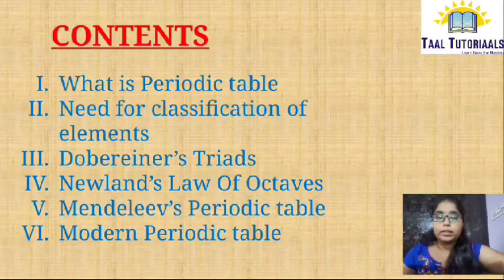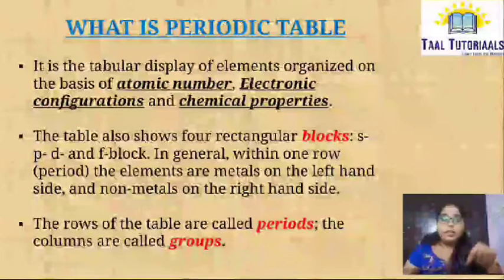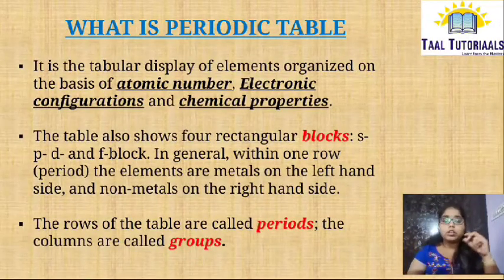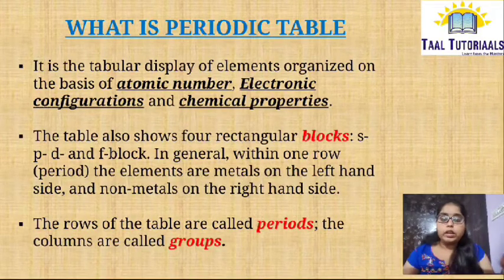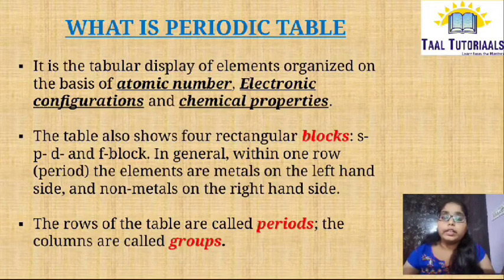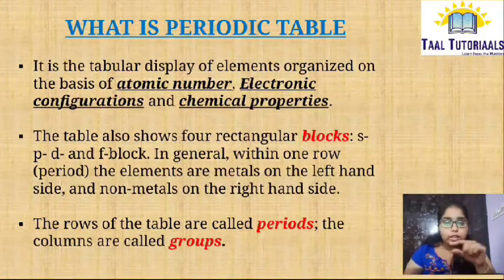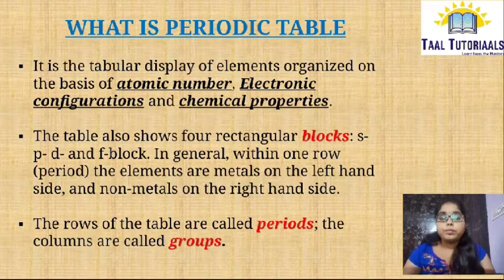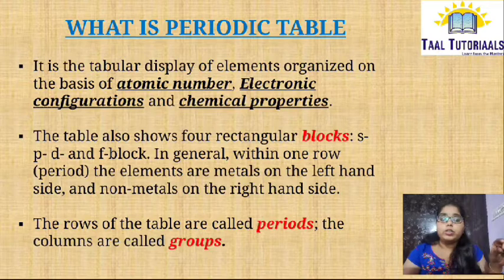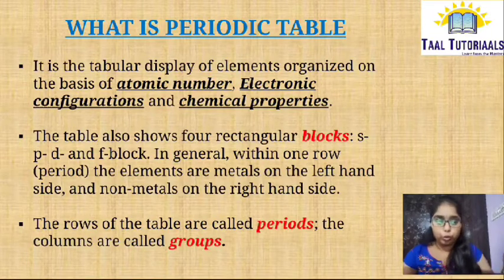A Periodic Table is a tabular display of elements. The elements are arranged on the basis of atomic number, electronic configuration, and chemical properties. In that table, we have some blocks like S block, P block, D block, and F block. If you take a single row in a Periodic Table, the left side of the row is always metals and the right side will always be non-metals. The row of the table is known as periods and the columns of the Periodic Table are taken as groups.